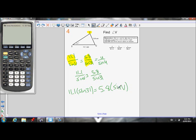Now, I want to get sine V by itself. I'm going to divide the 5.8 to the other side. And divide it to the other side. 5.8 goes here.